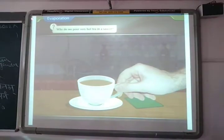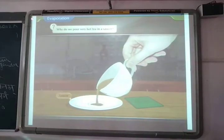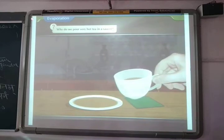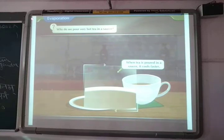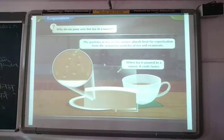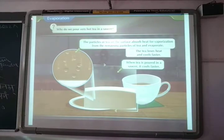Why do we pour very hot tea into a saucer? When the tea is poured in the saucer, it cools faster. Evaporation is a surface phenomenon. The particles of tea on the surface absorb heat for vaporization from the remaining particles of tea and evaporate. The tea thus loses heat and cools in the saucer.